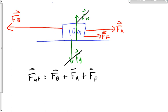The next step is usually to replace F-net with M times A. The only time I'm not going to do that is if I'm looking for the value of F-net itself. When plugging in the values of F-B, F-A, and F-F, you have to add negatives to the ones going in the opposite direction. Usually F-A and F-F will be positive and F-B will be negative — as long as F-B is opposite in sign to F-A and F-F.